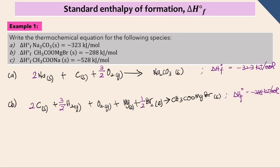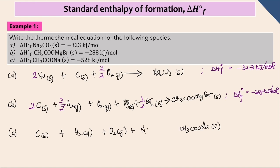For question C, we are given CH3COONa. CH3COONa is our target product and it must always be 1 mole. On the reactant side, write the reactants in their most stable element form with their phases. Then balance the equation with the condition that the target product is always 1 mole. Finally, write delta H_f^0 on the right side of the thermochemical equation.